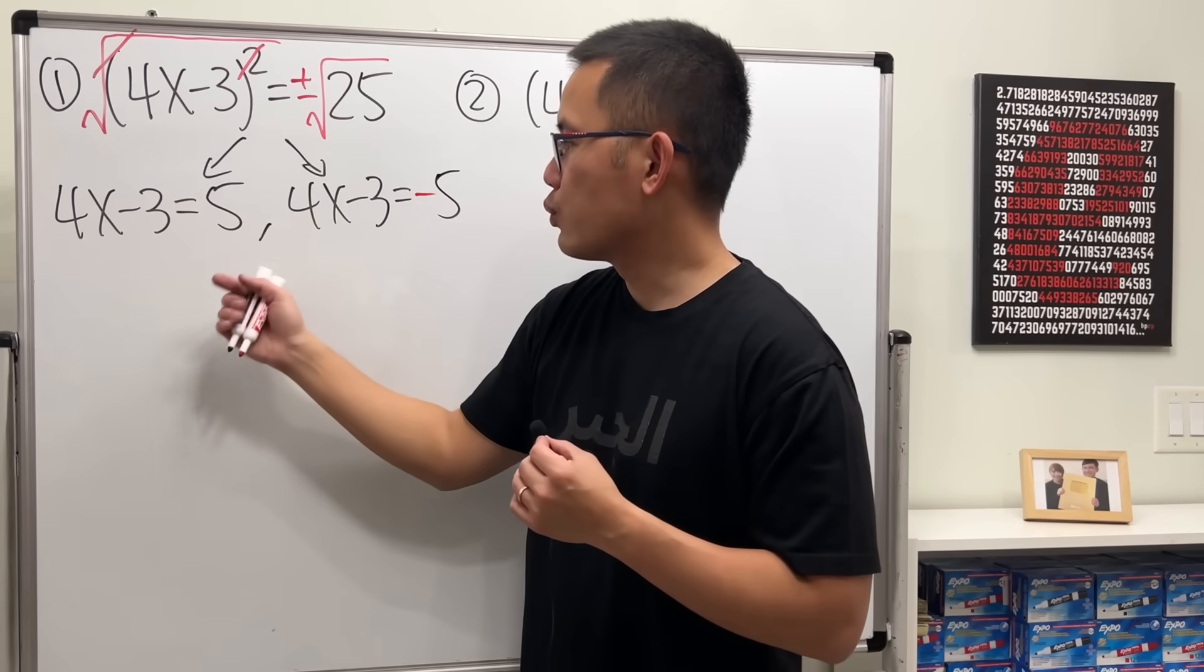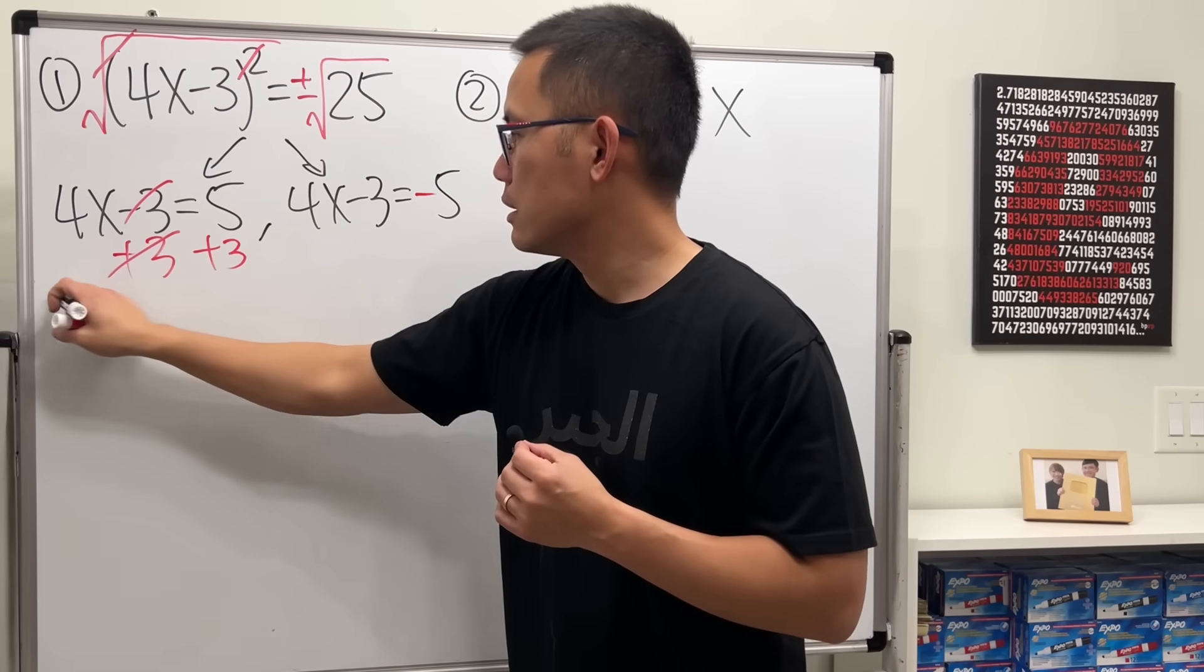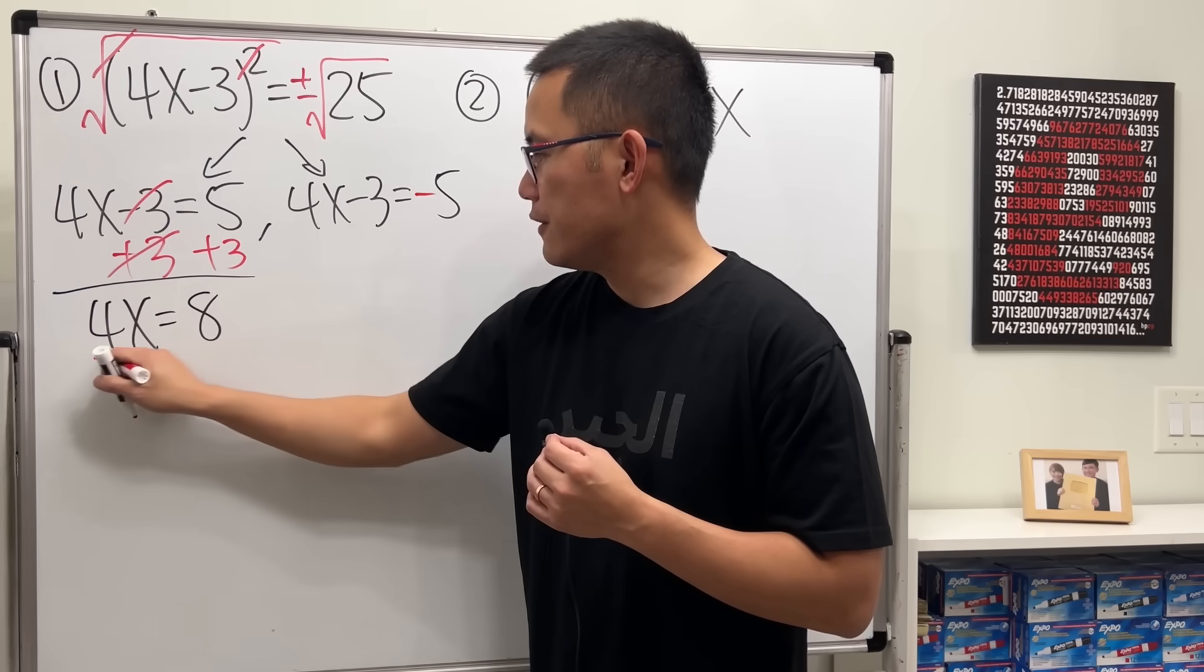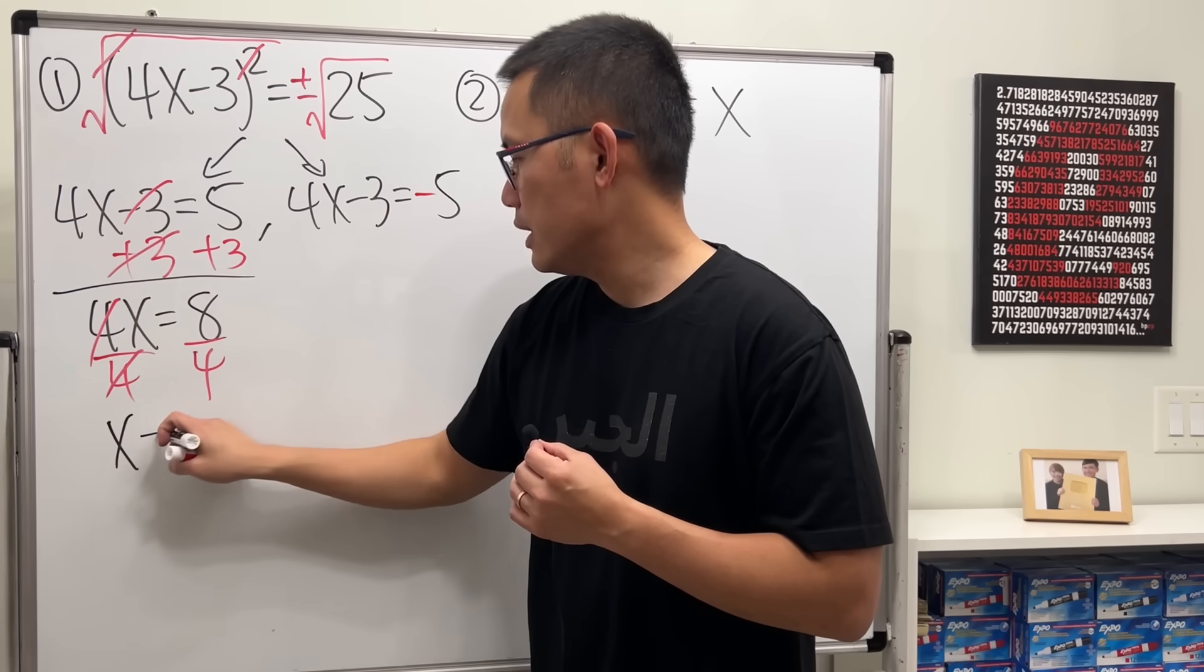So we have these two equations to solve. But they are not bad. For the first one, I'm just going to add 3 to both sides. So we have 4x equals 8. And then divide the 4 to both sides.